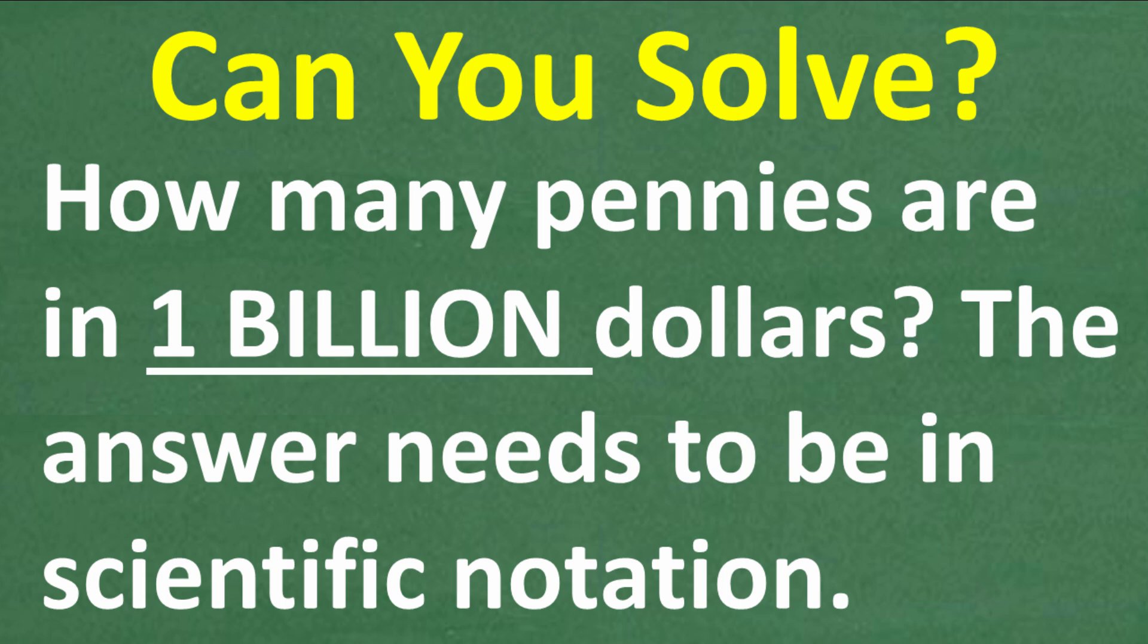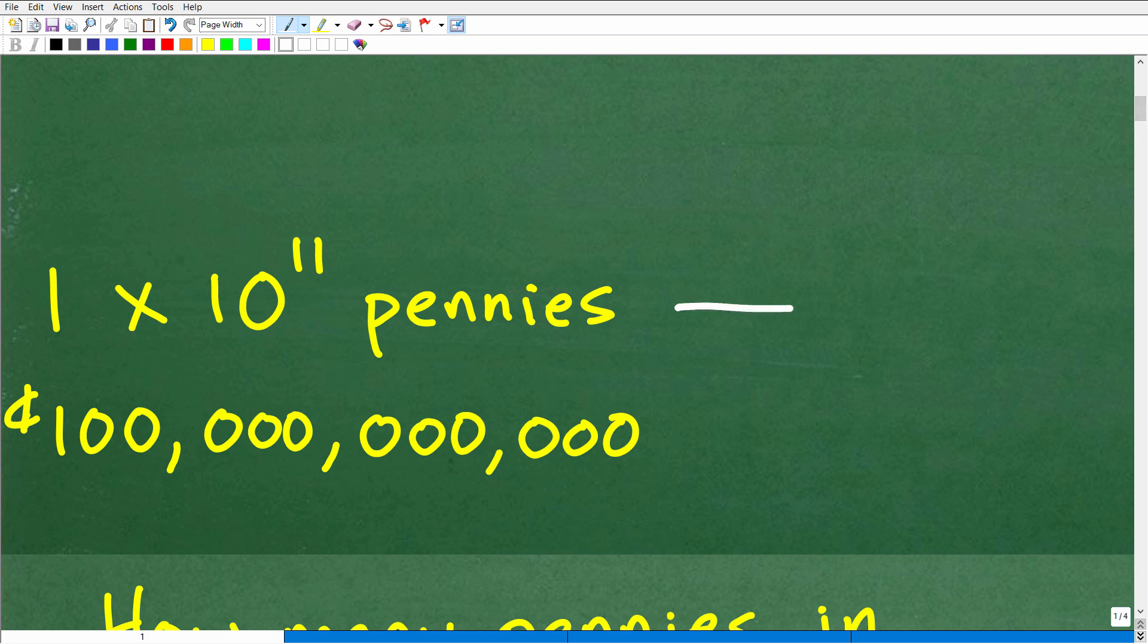Let's take a look at the answer. How many pennies are in a billion dollars? Well, this is the correct answer: 1 times 10 to the 11th power pennies. This is the correct amount of pennies in one billion dollars. This right here is what we call scientific notation.